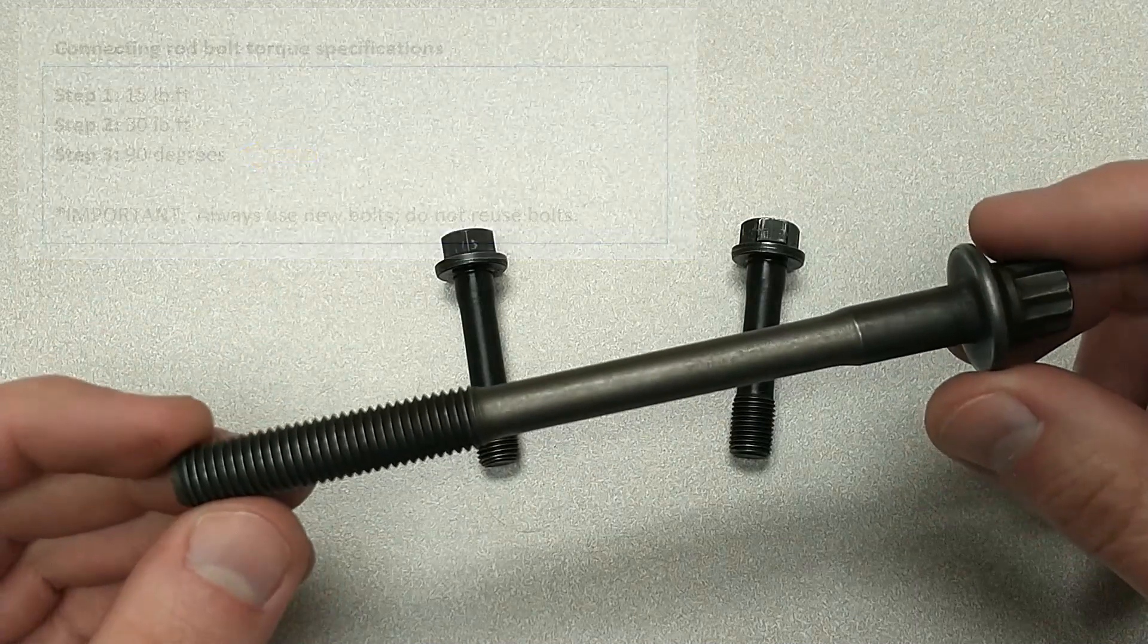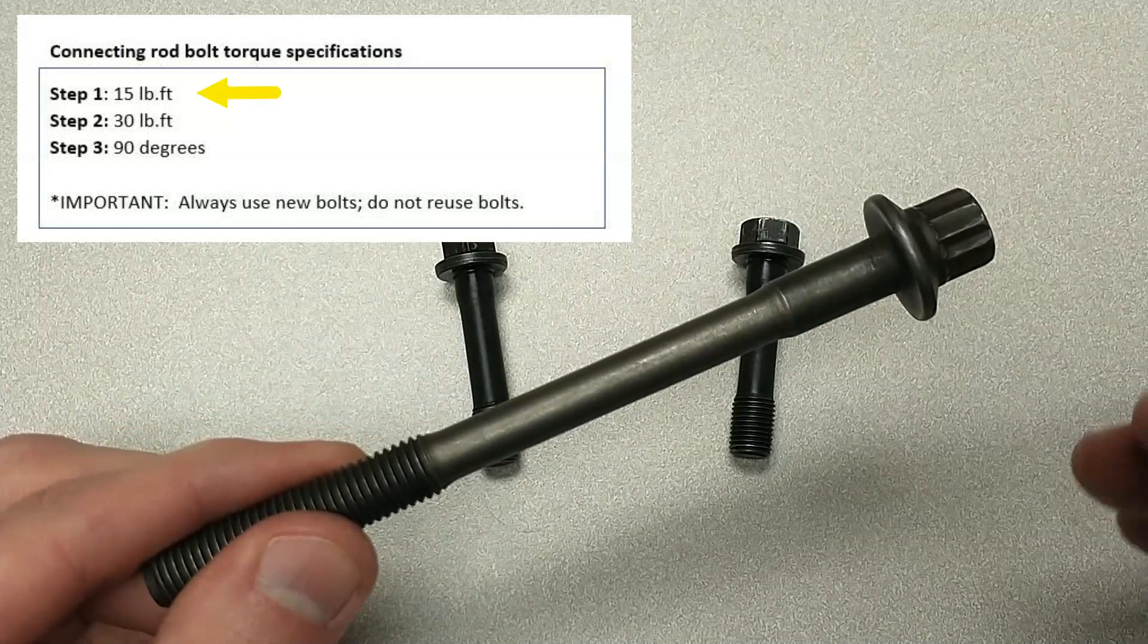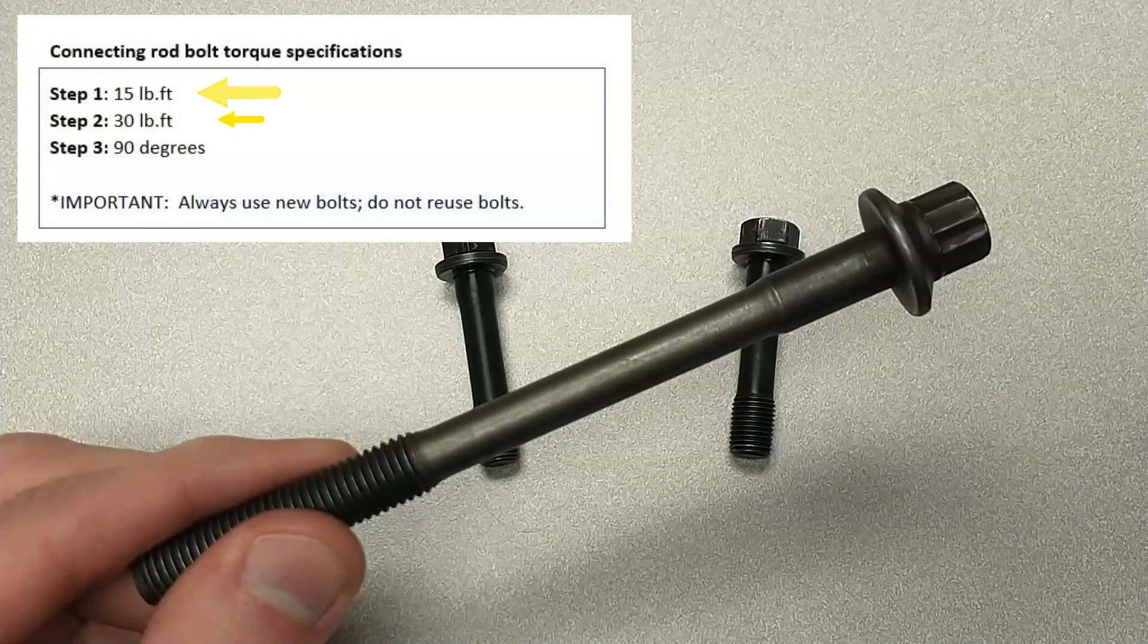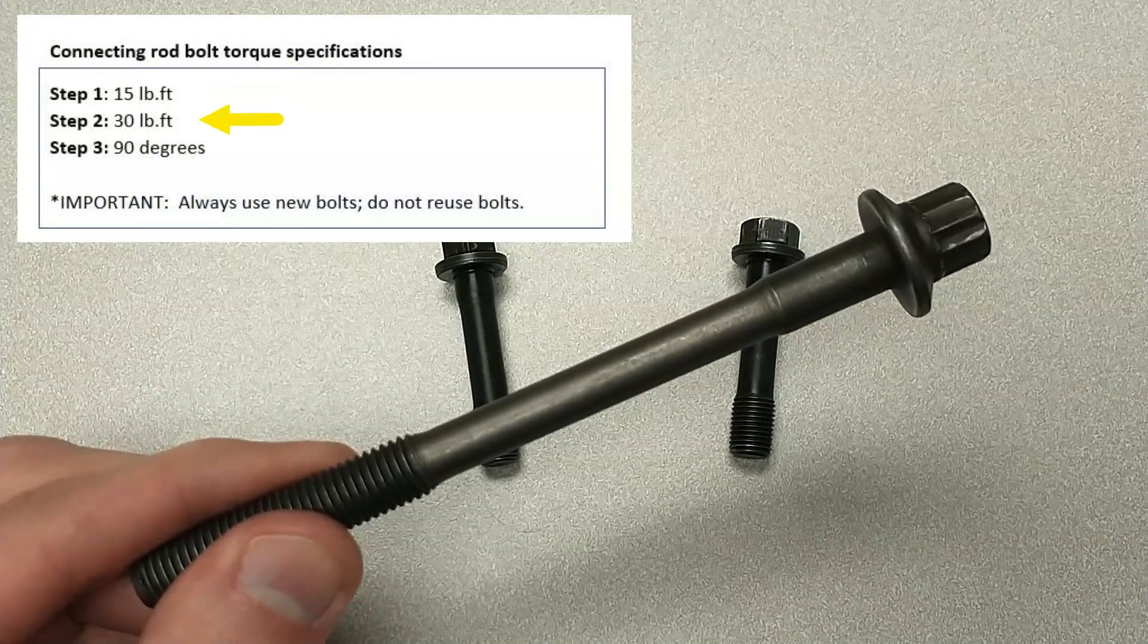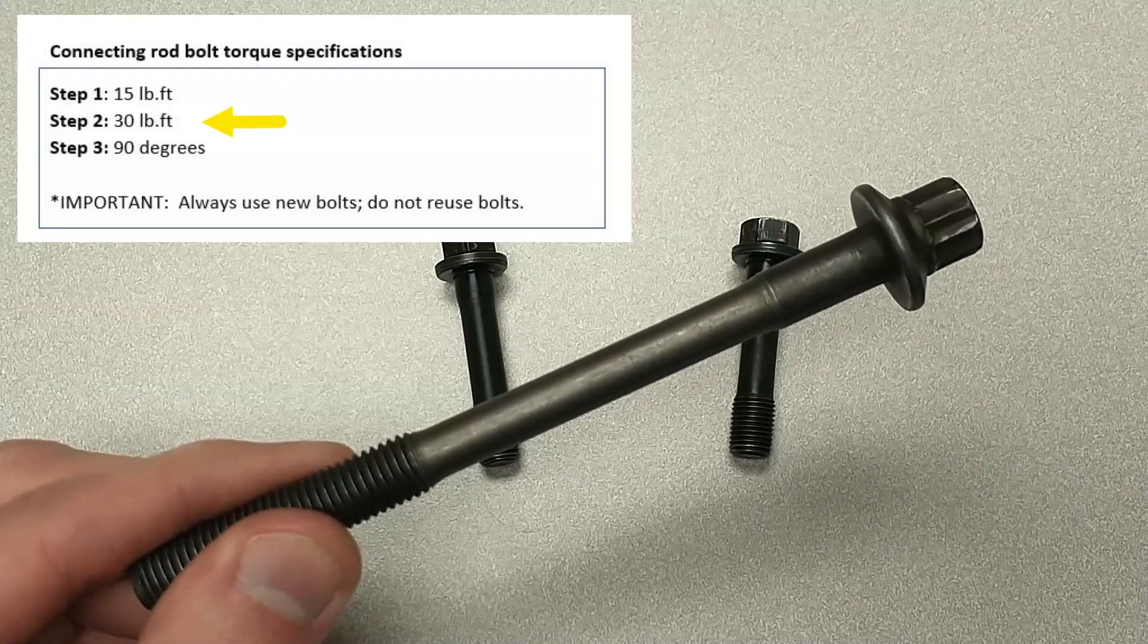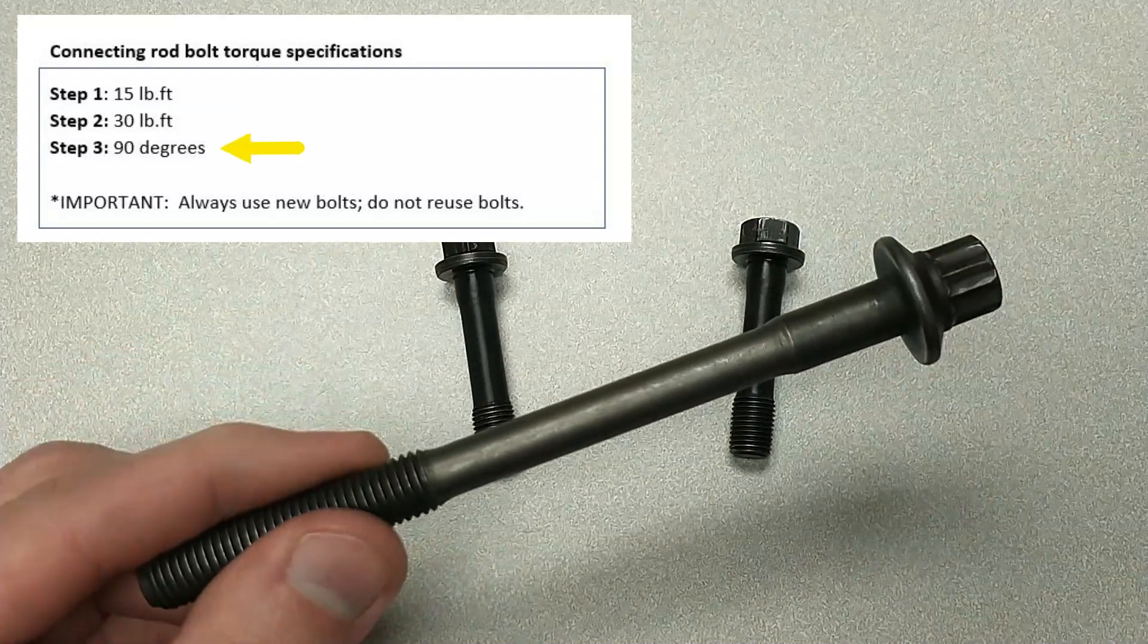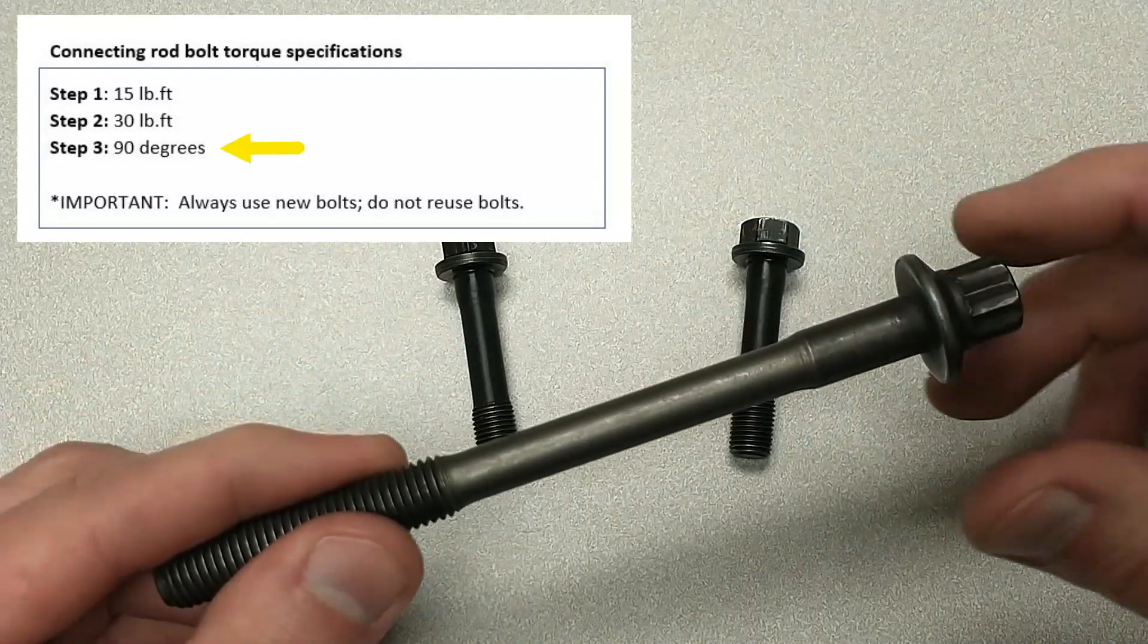If you get those kinds of instructions, I would recommend that you tighten to 15 following the sequence and tightening each of the bolts in order to 15 foot-pounds, and then follow the sequence again as you tighten to 30 foot-pounds and repeat that step one more time. Go back and check that they're all at 30 foot-pounds before proceeding to the final step which would be rotating the bolt 90 degrees.